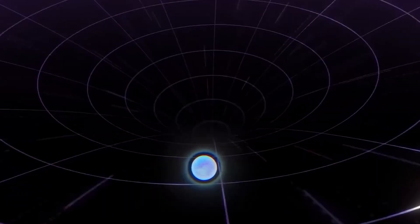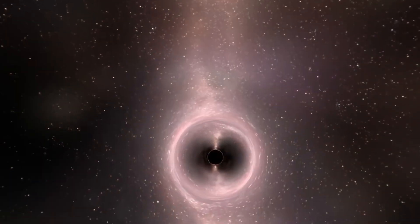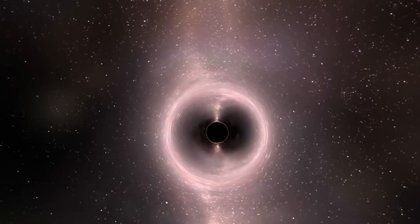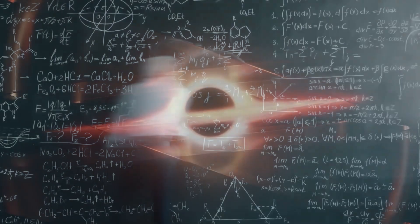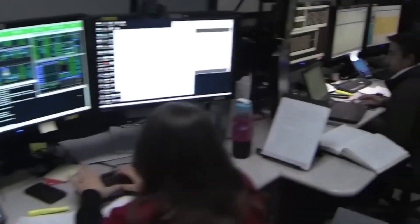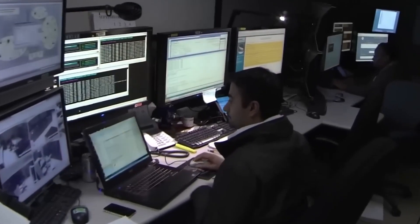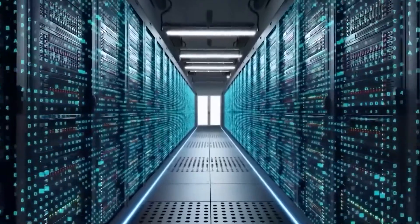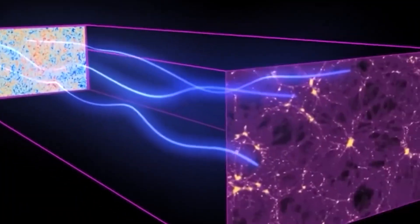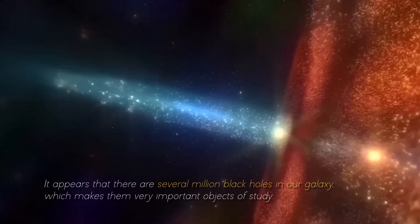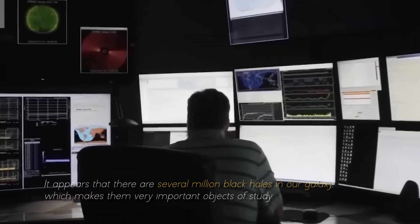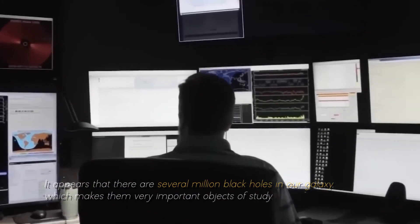This was no small discovery, as it had an incredibly high density, which gave it strong gravity. Scientists undertook the search for other black holes and discovered that there could be around 100 million of them in our own galaxy, the Milky Way. However, due to their extreme difficulty in detection, we still do not have a precise number. It appears that there are several million black holes in our galaxy, which makes them very important objects of study.